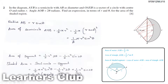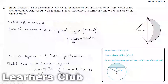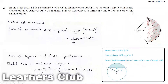Looking at the diagram, to find the area of the segment, we subtract the area of the triangle from the area of the sector: ½R²θ minus ½R²sin θ. In this question, we need to find the area of the segment and then subtract it from the semicircle area to get the shaded region. If we subtract the segment from the semicircle, we get the shaded region.